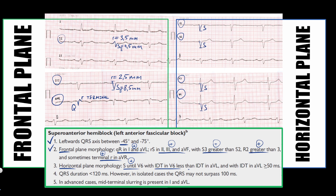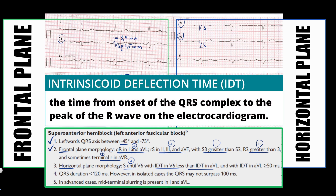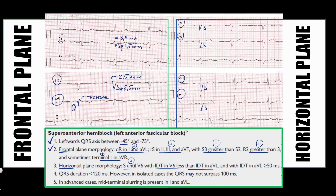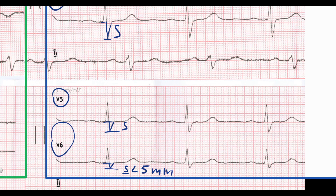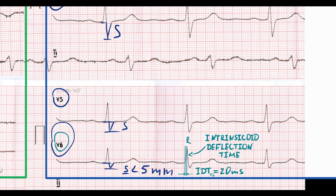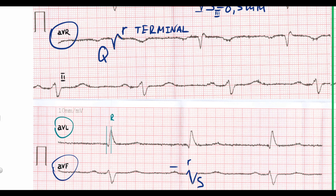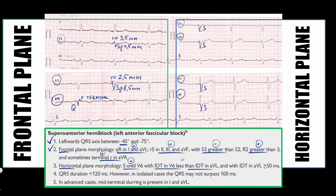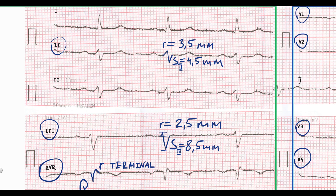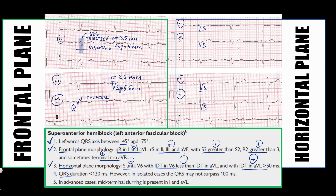The next step is intrinsicoid deflection time measurement, which is the time from the onset of the QRS complex to the peak of the R-wave. In left anterior fascicular block, intrinsicoid deflection time in AVL should be greater than in V6. In V6 it is 20 ms, while in AVL it is 50 ms — therefore it is greater in AVL, confirming this criterion. QRS duration measured in the second standard lead is 110 ms, which is less than 120 ms, satisfying the final criterion.